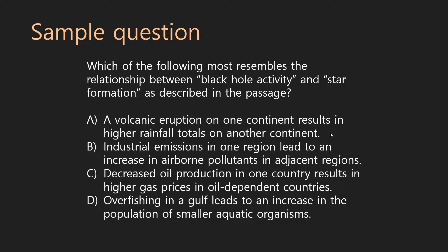Which of these describes the relationship between one thing causing and being very closely linked to the creation of another thing that's far away? Think about it. A says there's an eruption somewhere which causes rainfall — some kind of formation — far away on another continent. A looks pretty good to me, but let's check B. B says industrial emissions in one region lead to an increase in airborne pollutants in adjacent regions. Well, adjacent means next to, so that's not farther out in the galaxy. I'm going to cross that off due to the word adjacent. Remember, one word makes it wrong.